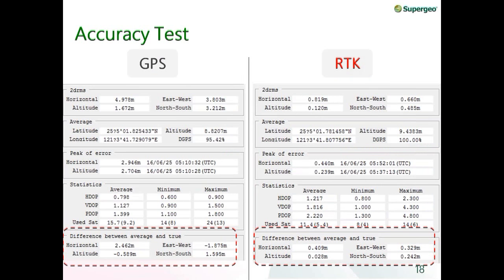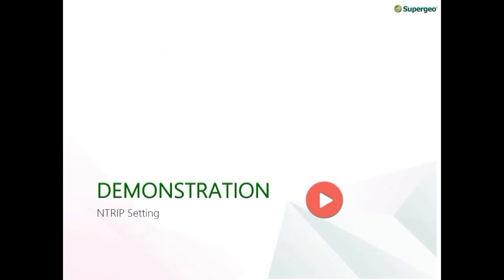I used a program to calculate position accuracy — the left side shows GPS values and the right shows RTK. The twice root mean square errors show that each RTK value is smaller than GPS. Looking at the difference between the average and true position, the RTK errors are each below 1 centimeter, proving that SuperPAD and V100 can achieve submeter-level accuracy. Now I'll show a demo of the NTRIP settings.